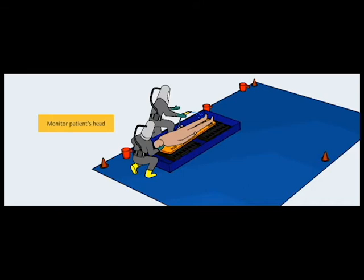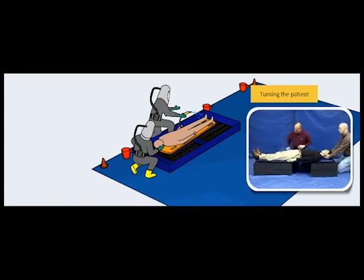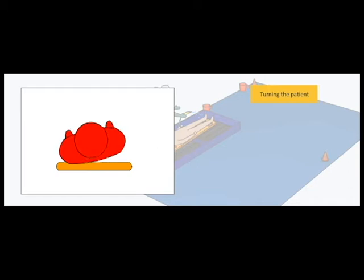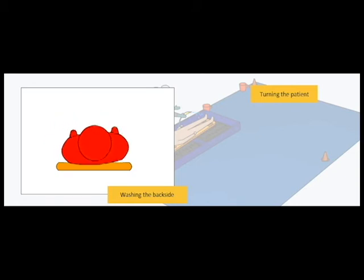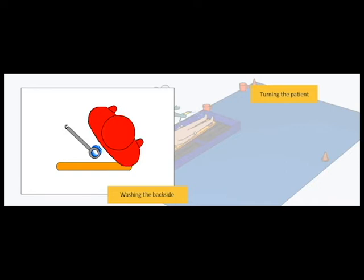After washing all accessible areas, use a log-rolling technique to access the back. From one side of the patient, one operations team member will place the patient's opposite arm over their chest and the near arm placed up alongside their head. The operations team member then leans over and rolls the patient toward themselves. The other team member scrubs and rinses the patient's backside. The process is repeated from the other side. A full rinse of all affected areas and the backboard completes the washing process.